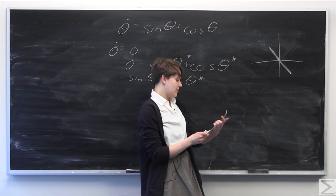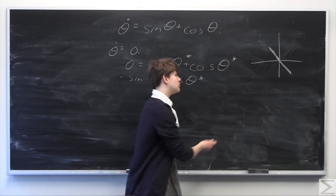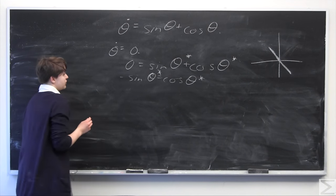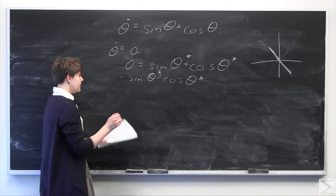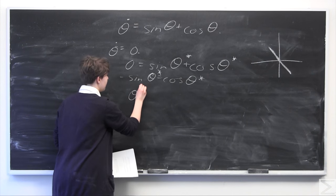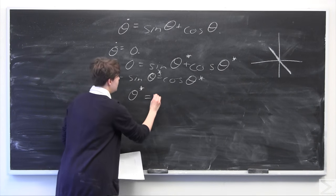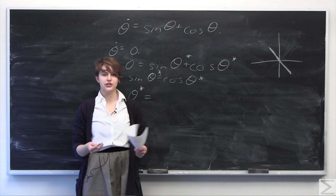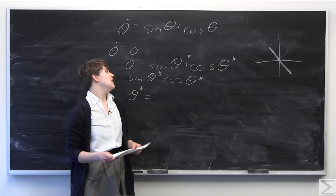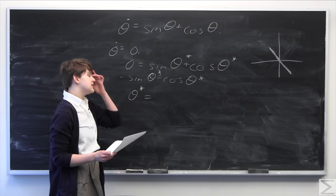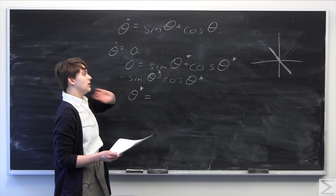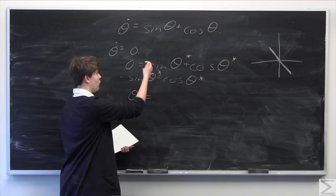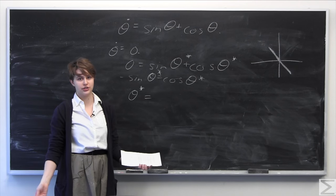Our two solutions are going to be 3 pi over 4, which we can express as 3 pi over 4 plus k pi. Our system is 2 pi periodic, meaning because we have a flow on a circle, the solutions repeat themselves in a periodic manner every 2 pi — which is why this is defined as a one-dimensional flow on a circle.